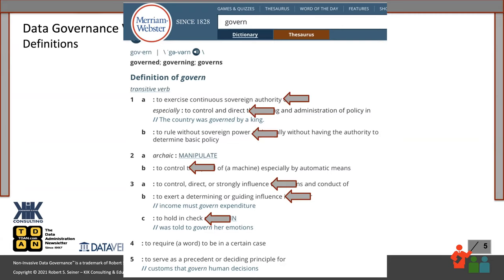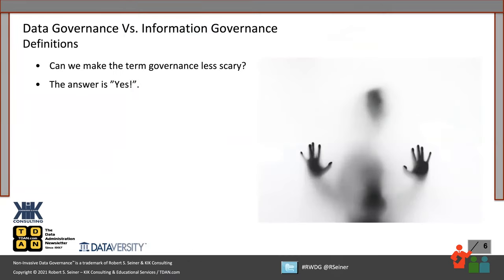Does it make a difference if we call it data governance versus information governance? Let's look at the word governance and see how it's being defined. The dictionary definition uses some pretty strong words: to exercise authority, to control, to direct, to rule, and to control. There's a common theme in the definition, and the first thing a lot of people think when they hear governance is that the term itself is very scary. So organizations are thinking, do we need to call it something else — something that will be more acceptable?